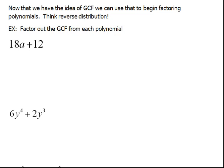Here in this example it says factor out the GCF from each polynomial. So we have 18a plus 12. We're looking to see what do those things have in common that we can then do reverse distribution. So can you look at both of these and see, okay, as far as numbers, what do they have in common?